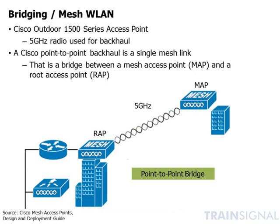The last survey model is when access points form a bridge or mesh network. These can be deployed outdoors or indoors. There are two types of access points: the root access point, which has a wired connection, and the mesh access point, which does not. Traffic from the mesh access point that needs to reach the wired network must go through the root access point.